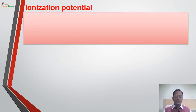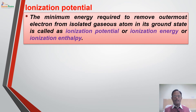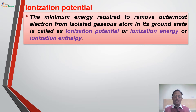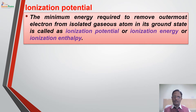How will you define ionization potential? It is the minimum amount of energy which is required to remove the outermost electron from an isolated gaseous atom in its ground state. It is sometimes called ionization potential, ionization energy, or ionization enthalpy — all three terminologies mean the same. It is generally expressed in terms of kJ per mole or kcal per mole.